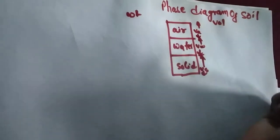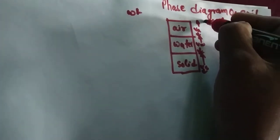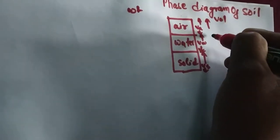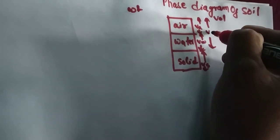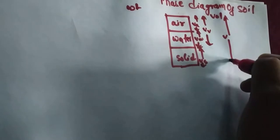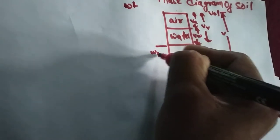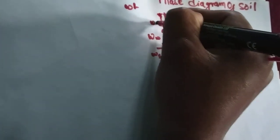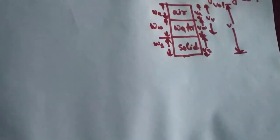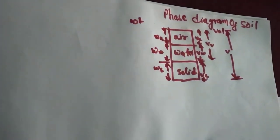In volume, from here to here, this is volume of solid, volume of water, and volume of air. Volume of air and volume of water together is your volume of void, and V is total volume. Similarly, this is weight of solid, weight of water, and weight of air.